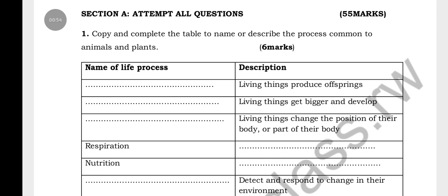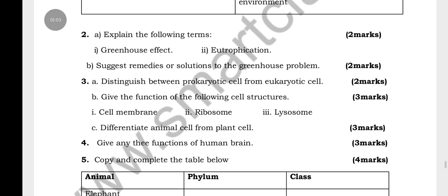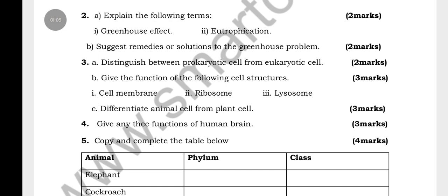Question 1 is about completing the table and naming or describing processes common to both animals and plants. Question 2 asks you to explain the terms greenhouse effect and eutrophication, and also to suggest remedies or solutions to greenhouse problems. There is also a question to distinguish between prokaryotic and eukaryotic cells.